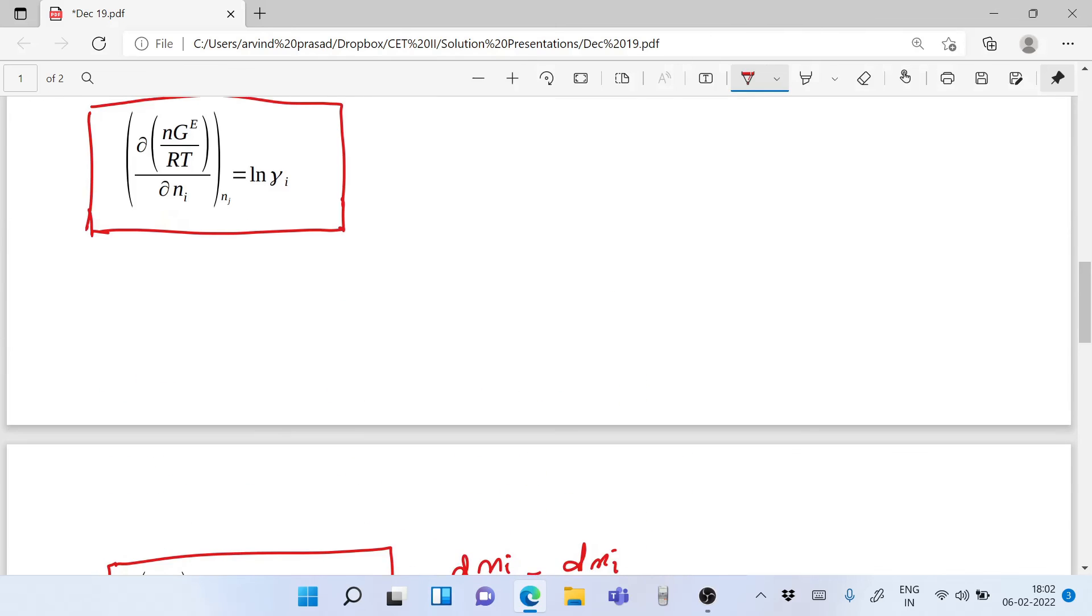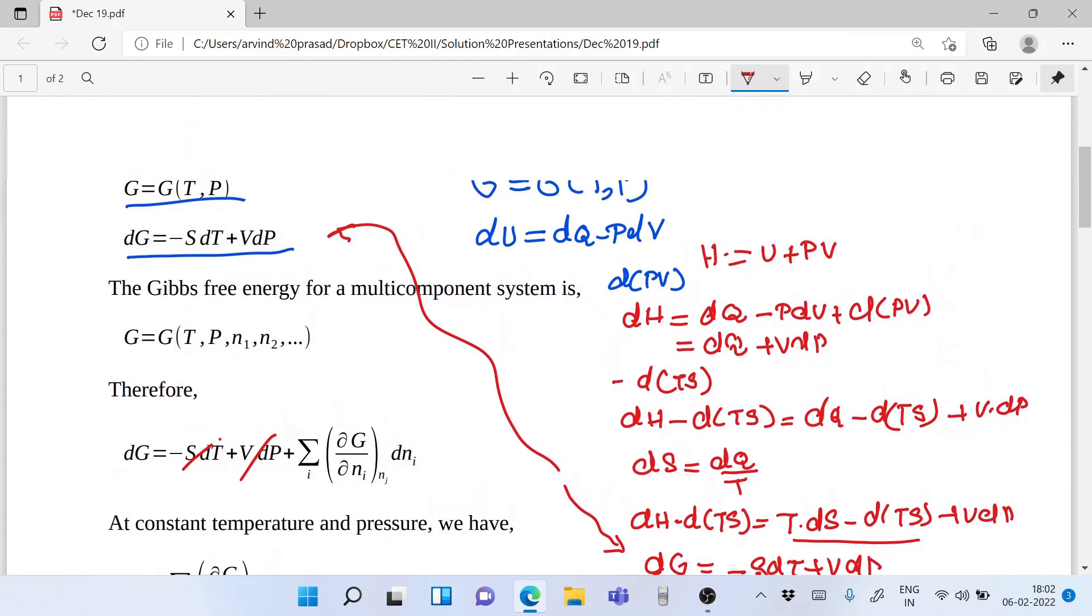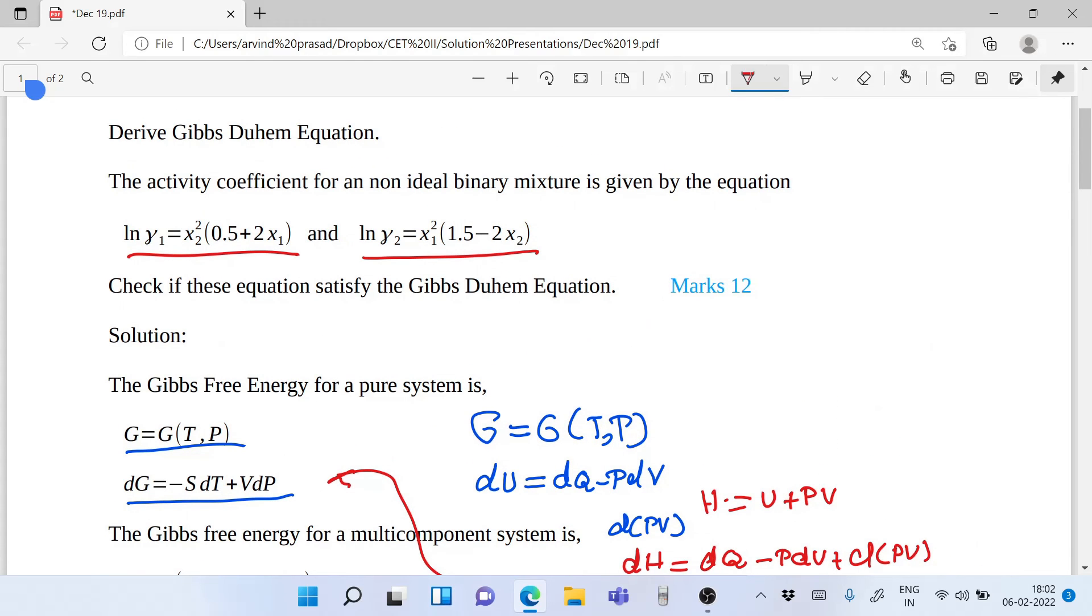If the equation satisfies Gibbs-Duhem, mathematically it is the right equation to describe the activity coefficients of the fluid. But one needs to realize that the mathematics may be right, but it may not fully describe the points. Sometimes the equation may be right but may not represent the fluid in the entire range of temperature and pressure. It may only represent it correctly in a limited range for which the VLE data is taken.